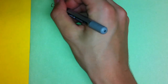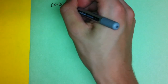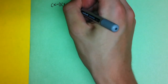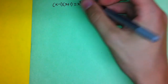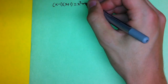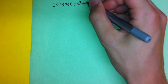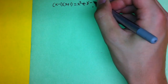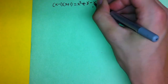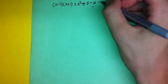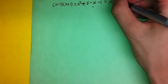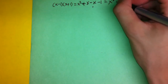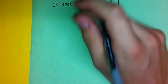The next problem is (x - 1)(x + 1). x times x equals x squared, x times 1 is x, negative 1 times x is negative x, and negative 1 times 1 is negative 1. The x's will cancel, therefore giving x squared minus 1.